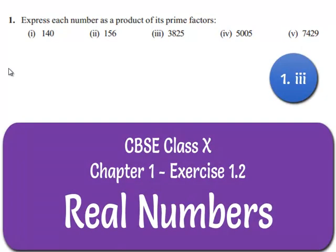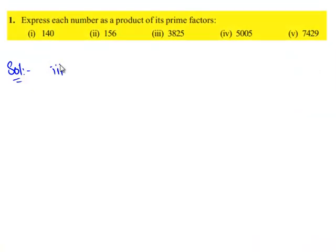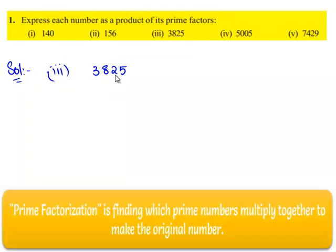Now, let us move on to the third bit. The third number given is 3825. To express 3825 as a product of its prime factors,